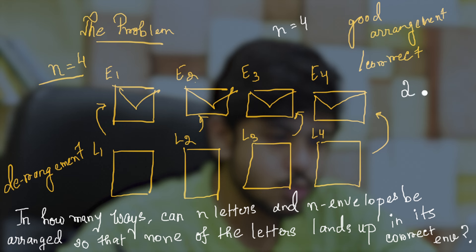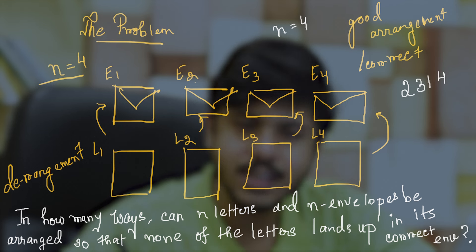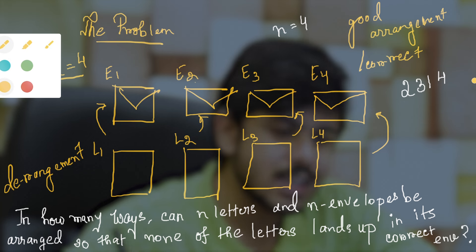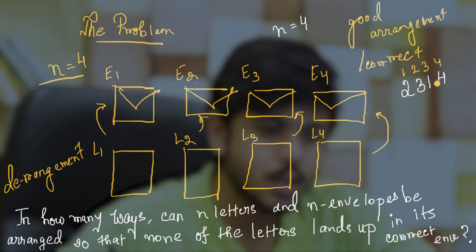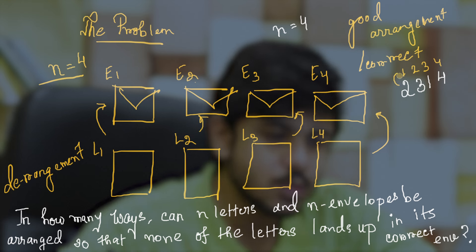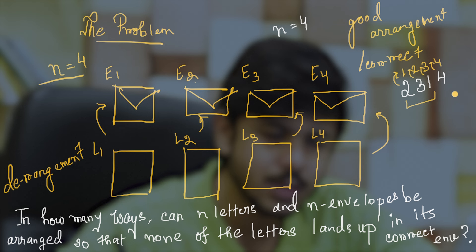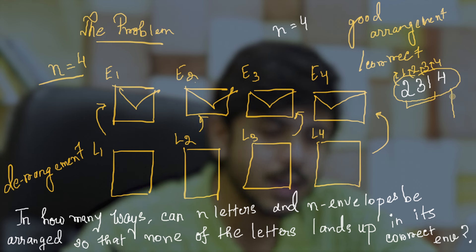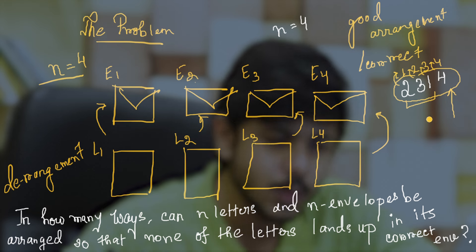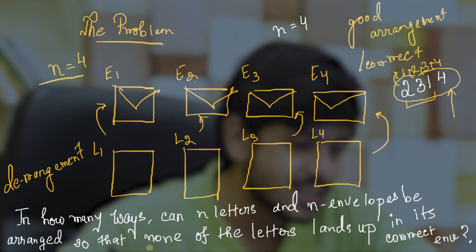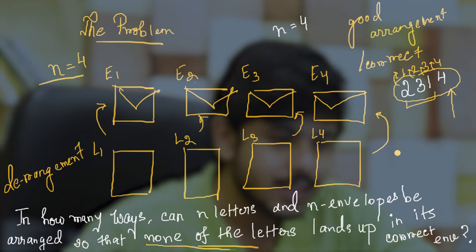Take a moment and try to find out what a derangement sequence can be for n equal to 4. Would 2, 3, 1, 4 be a valid derangement sequence? Let's put their indices on top. Letter number 2 has found its way into envelope number 1, letter number 3 into envelope number 2, letter number 1 into envelope number 3, but letter number 4 has found its way into envelope number 4. So 2, 3, 1, 4 is not a valid derangement — none of the letters can land up in its correct envelope.